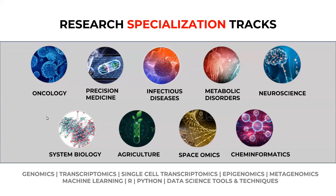After training comes the research specialization tracks. Most of you as students reach out to us saying you want to work on a dissertation project as January commences. Once your training is completed in a specific omics field, the question becomes: what type of research question do you want to work on? Do you want to work with a specific metabolic disorder like diabetes, a specific type of cancer, in the field of agriculture, or perhaps understand how omics data looks in astronauts?